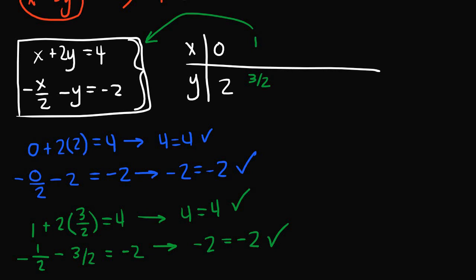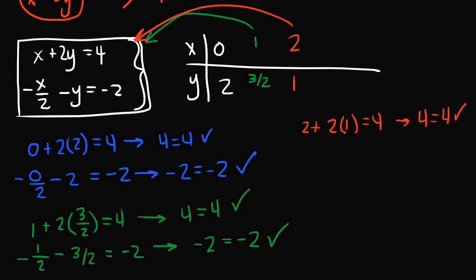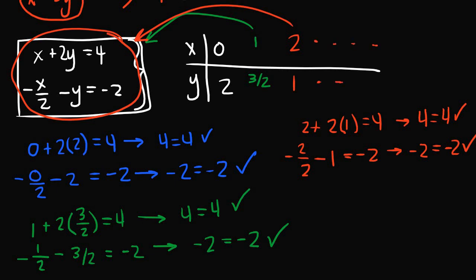Let's try one more solution set: x equals 2 and y equals 1. For the first equation: 2 plus 2 times 1 equals 4, so 4 equals 4. For the second equation: negative 2 over 2 minus 1 equals negative 1 minus 1 equals negative 2, which matches the right-hand side. This is also valid. So for this system of linear equations, we have many, in fact infinitely many, solution sets.